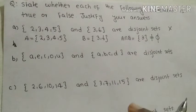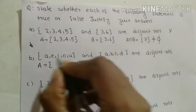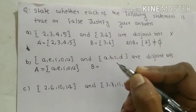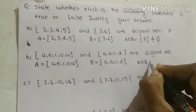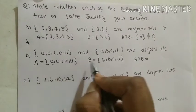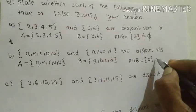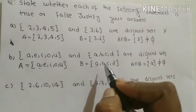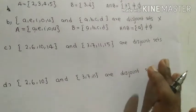The second question: A = {a, e, i, o, u} and B = {a, b, c, d}. The element 'a' is common in both sets, so A intersection B equals {a}, which is not equal to the null set. Therefore these two sets are not disjoint sets, and the given statement is false.